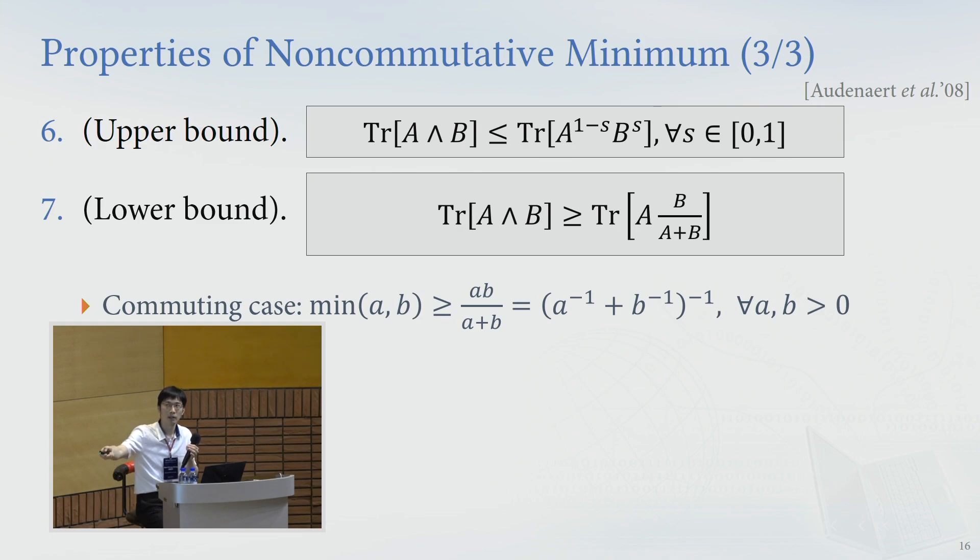And then this guy's like, we call this the parallel sum, the product over the sum, and it's easy to see in the commuting case, so it's trivial in the commuting case.